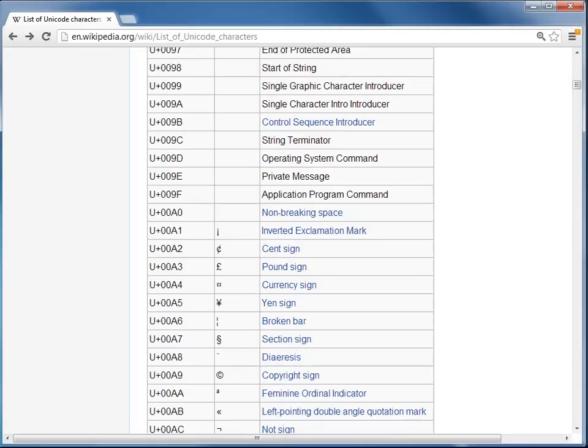I'm going back here to my list of Unicode characters. At this point, I'll scroll down a little bit. You can see my numbers get bigger, and I ended up at some characters that are not on my keyboard. Let's say, for example, the pound sign is not on my American keyboard.